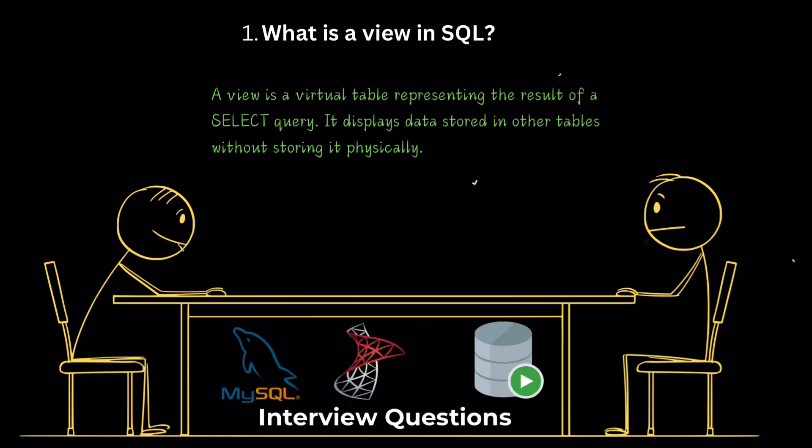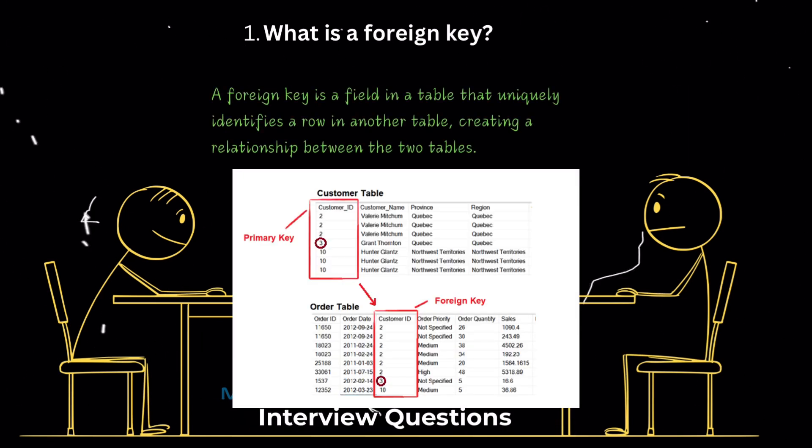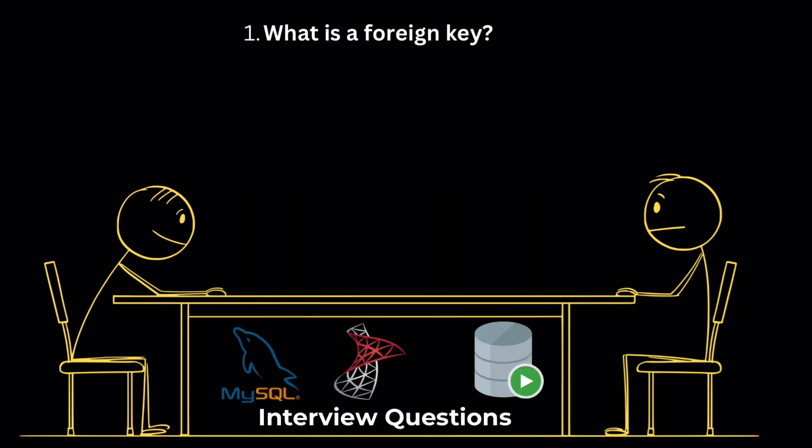What is a foreign key? A foreign key is a field in a table that uniquely identifies a row in another table. This creates a relationship between the two tables. For instance, in the orders table, the C_ID field is a foreign key that references the C_ID primary key in the customers table, linking each order to a specific customer.